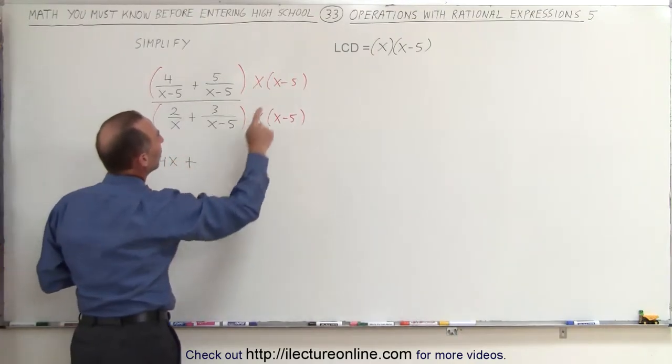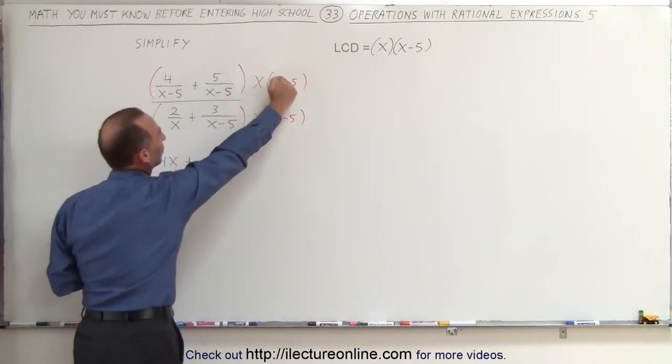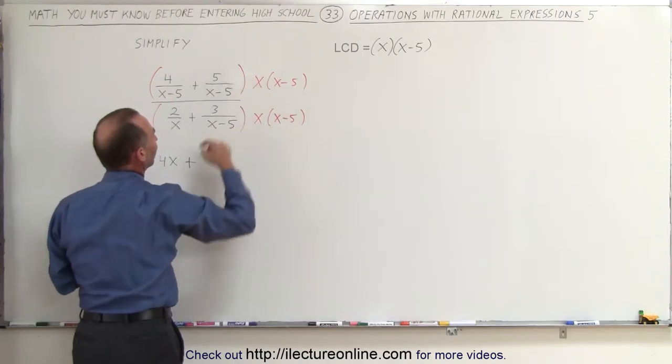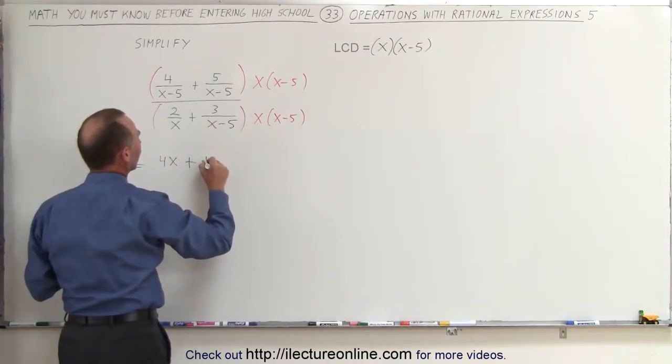Plus here, when we multiply this times this again, x minus 5 cancel out, and multiply 5 times x. So this is 4x plus 5x in the numerator.